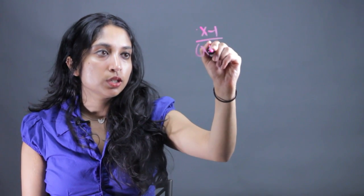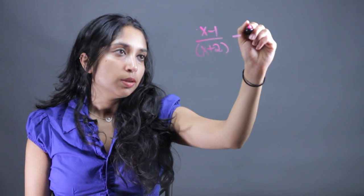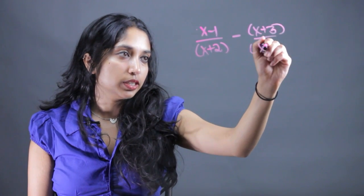Say you had something like x minus 1 over x plus 2, minus x plus 3 all over x minus 2.